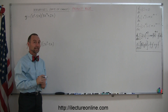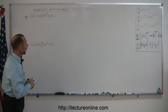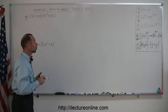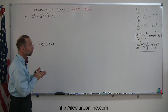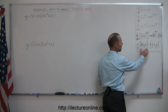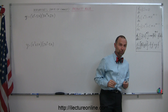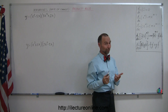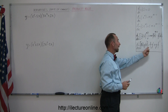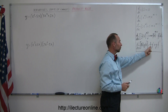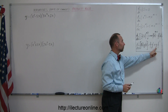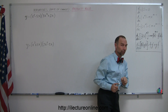Welcome to iLecture Online. Here we're going to show you some more examples of how to take derivatives. In this case we're going to show you some examples where you need to use the product rule. The general concept is: you have the product of two functions — that's why they call this the product rule. You take the first function and multiply it times the derivative of the second function, plus the second function times the derivative of the first function.